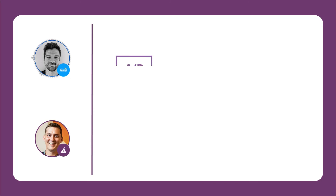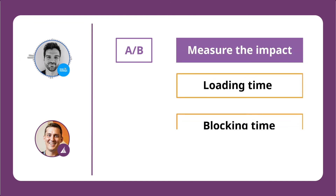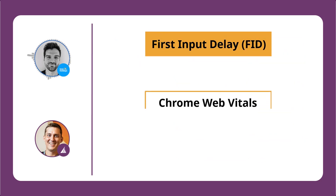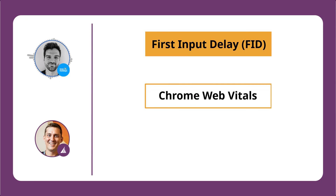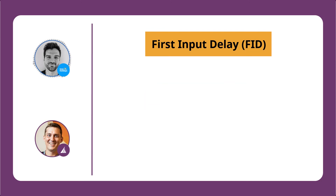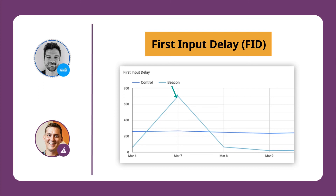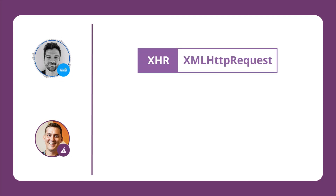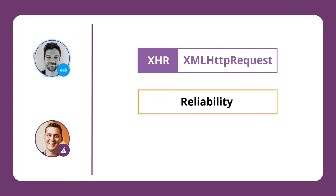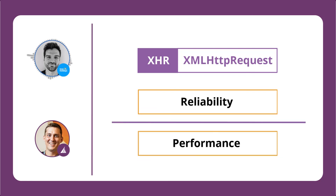We actually ran an A/B test of this, measuring the impact on loading time, total blocking time, and first input delay. First input delay is one of the key Chrome Web Vitals that Google uses for SEO scoring. The graph shows that first input delay using the Beacon API was just dramatically lower — from nearly 300 milliseconds down to under 20 milliseconds — by moving off the synchronous XHR request to the Beacon. Naturally this can just be toggled on; people who still want to use XHR for reliability reasons can choose to, but the performance impact was huge. We're now confident this won't negatively affect our first input delay going forward.